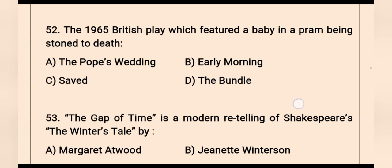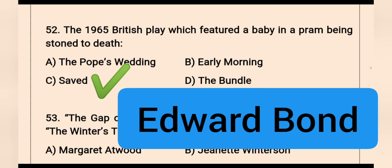Question 52: The 1965 British play which featured a baby in a pram being stoned to death — the right option is Saved. All four options — The Pope's Wedding, Early Morning, Saved, and The Bundle — are plays by Edward Bond. The Bundle tells the story of an adopted infant.